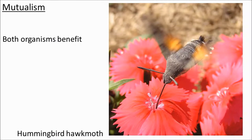Mutualism: the relationship between flowering plants and pollinators is usually mutualistic. The plant gets its pollen moved to other plants, and the pollinator gets energy-rich nectar. So there we are — a quick run through of interdependence. I hope that was useful to you. Thank you very much for watching.